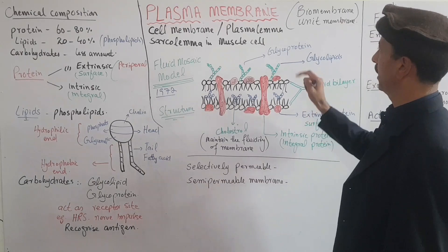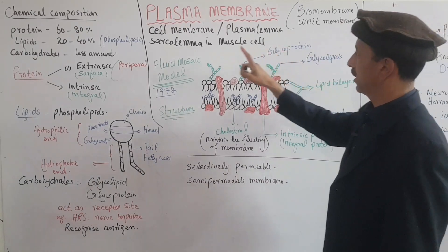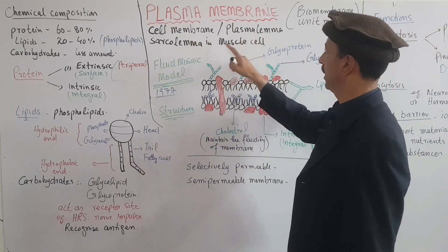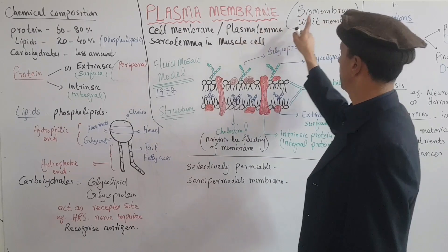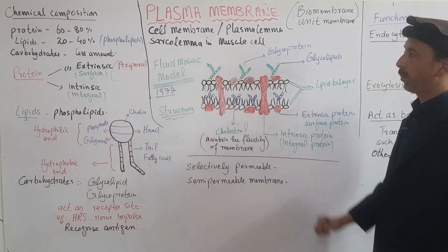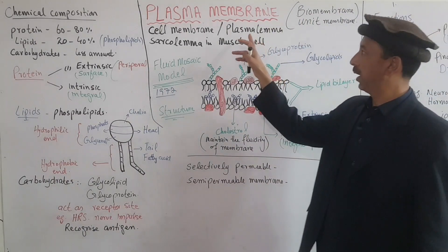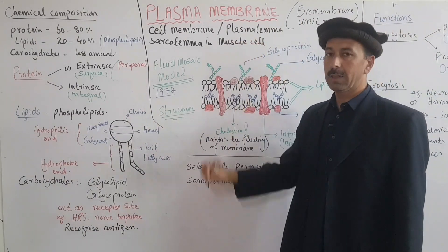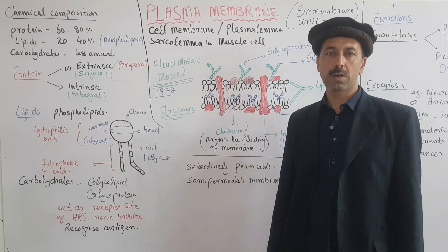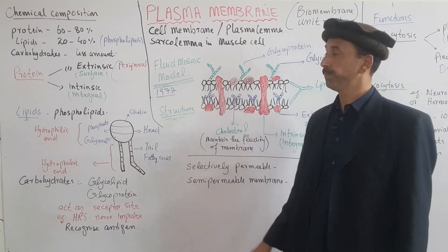Plasma Membrane has different names. There is Sin Membrane, there is Bio Membrane, there is Unit Membrane. The historical name is Plasma Lima — Plasma Lima is the historical name of Plasma Membrane.